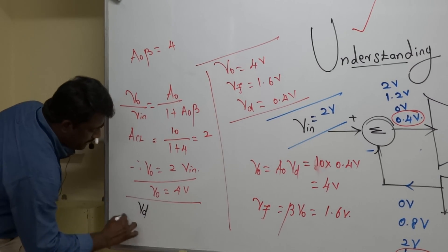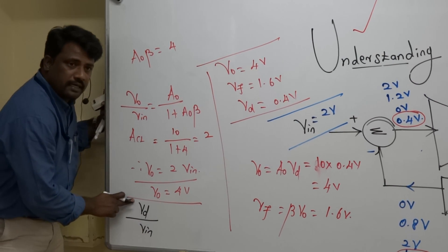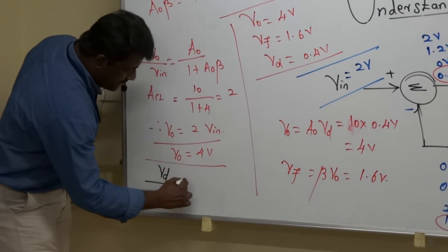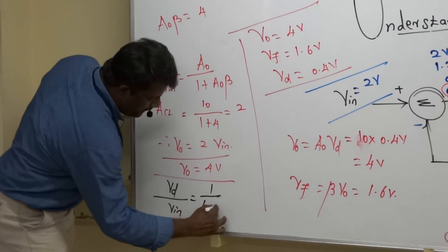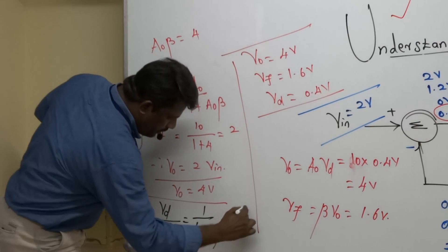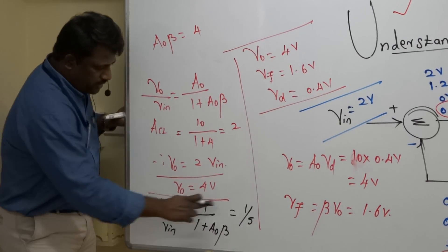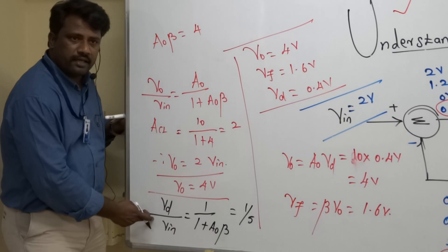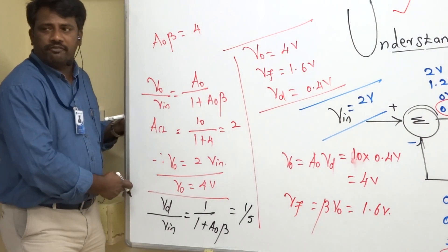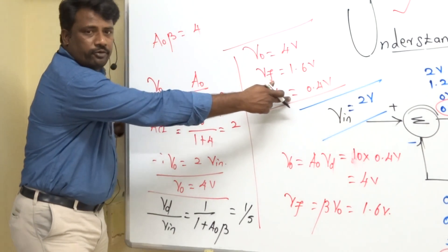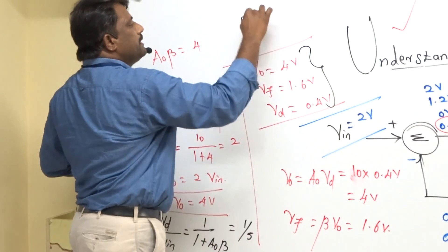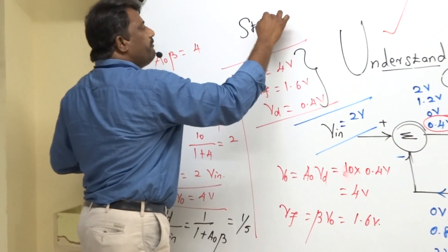There is one more transfer function: Vd/Vm = 1 / (1 + A₀·β). Since A₀·β = 4, this is 1/5. With Vm = 2 volts, Vd = 2/5 = 0.4 volts, which matches the steady-state difference we calculated. That is how negative feedback naturally brings the output, feedback signal, and error to their steady-state values.